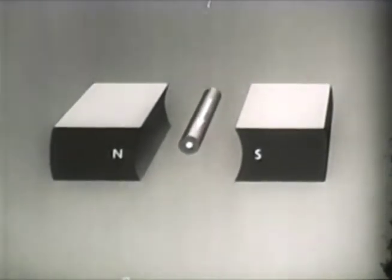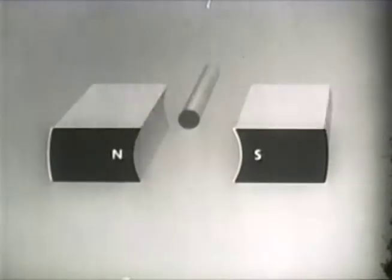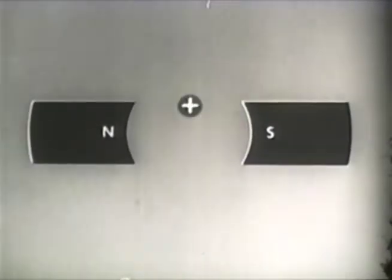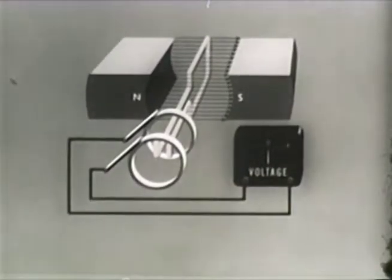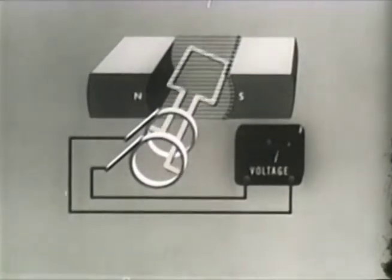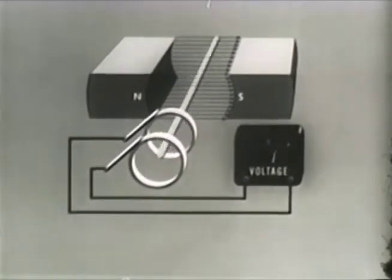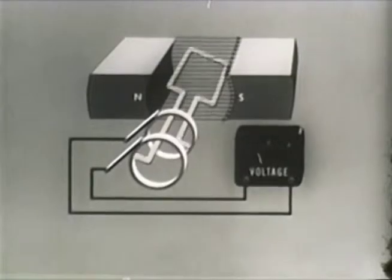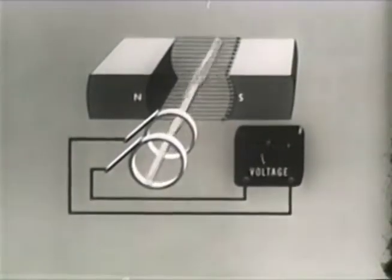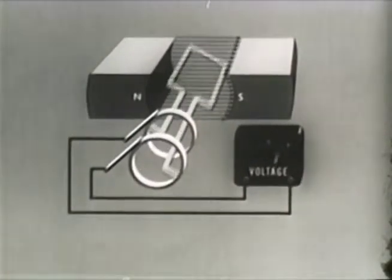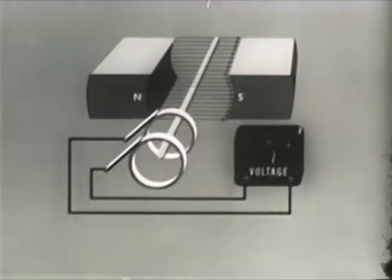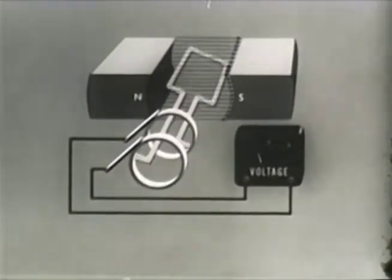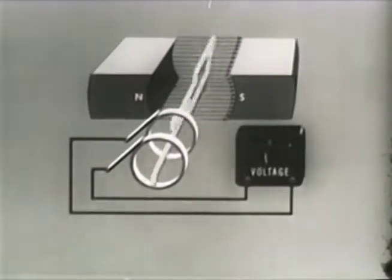However, moving a conductor in and out of the field in this straight reciprocal fashion is awkward and impractical. A simple generator of EMF can also be made by rotating a single turn coil within a stationary magnetic field of two magnets with opposite polarity. The loop now, in effect, becomes two conductors because both the top and bottom sections cut magnetic lines during rotation.